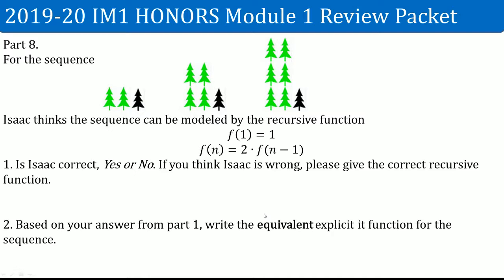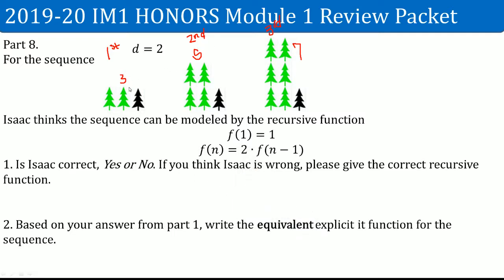Part 8. Given the first, second, and third terms of a sequence, Isaac thinks the recursive function is f(1) = 1 and f(n) = 2 times the previous term. The first term I got is 3, the second term is 5, and the third term is 7. The common difference is 2. Isaac is wrong — the first term should be 3, and this is an arithmetic sequence, not geometric.